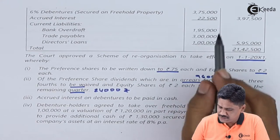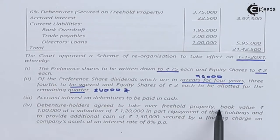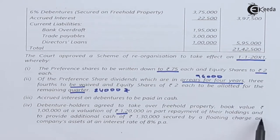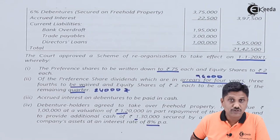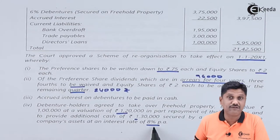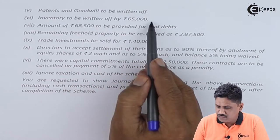Accrued interest on debentures of Rs.20,500 is to be paid in cash. Debenture holders agree to take over the freehold property at a valuation of Rs.1,20,000 against its book value of Rs.1,00,000. So firstly the property is appreciated by Rs.20,000 and then it is taken over by the debenture holder. They will also provide additional cash of Rs.1,30,000 secured by a floating charge on company's assets at 8% per annum — these are fresh debentures. Patent and goodwill are to be written off.